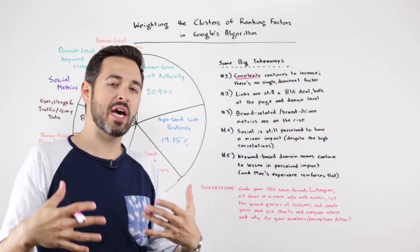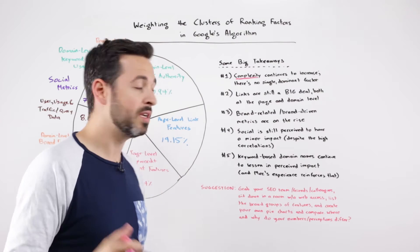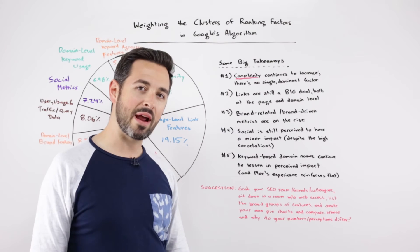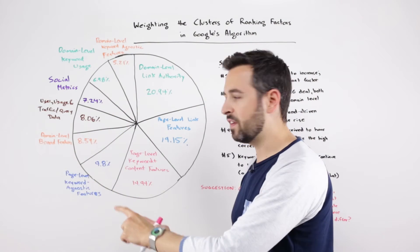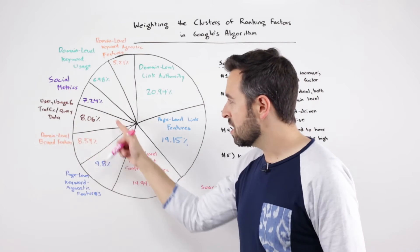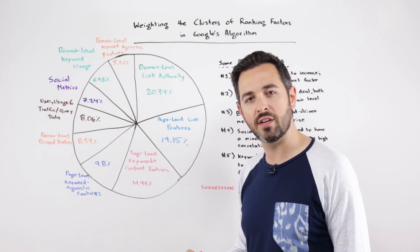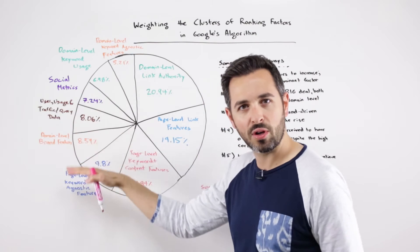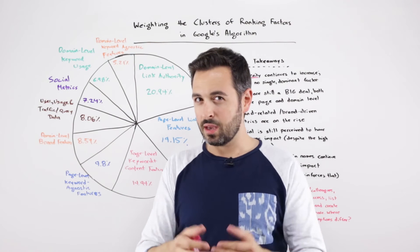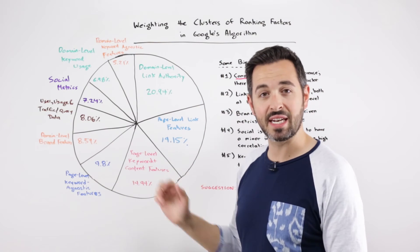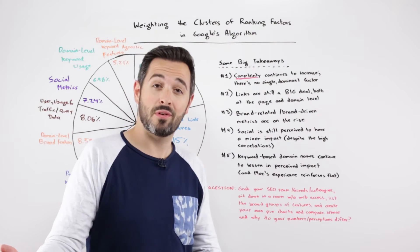This is reflected in people's attitudes towards link acquisition — hey, that's still a really important practice. Number three: brand-related and brand-driven metrics are on the rise. Domain-level brand features and user usage or traffic query data are comprising a percentage that actually exceeds page-level keyword content and features in some cases. This is really the branding world happening right here. So if you're not building a brand on the web, that could be seriously hurting your SEO — maybe to the same degree that not doing on-page optimization is.